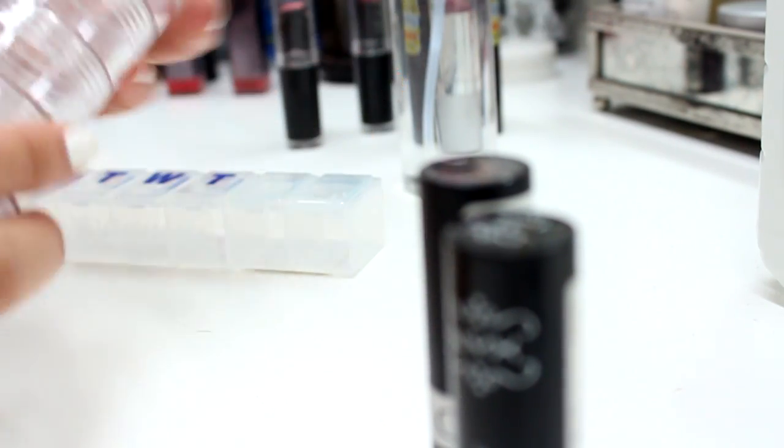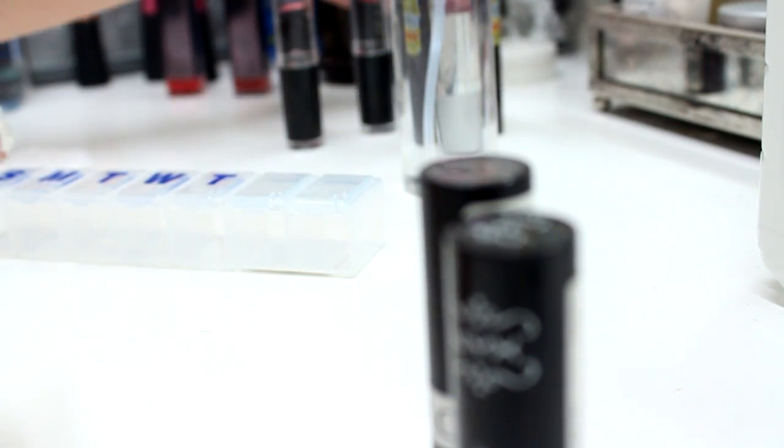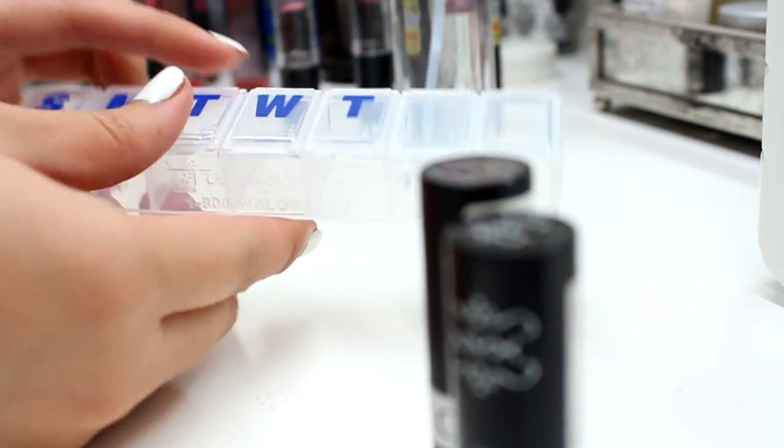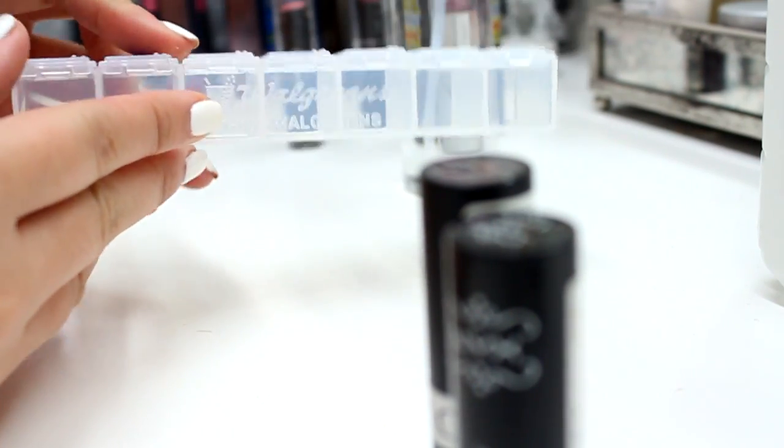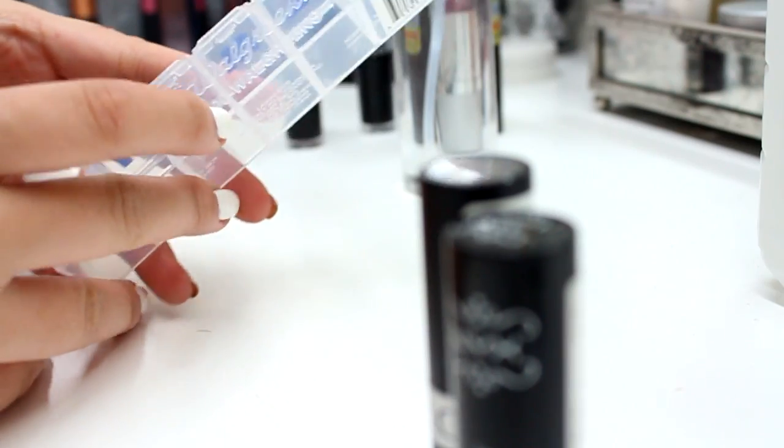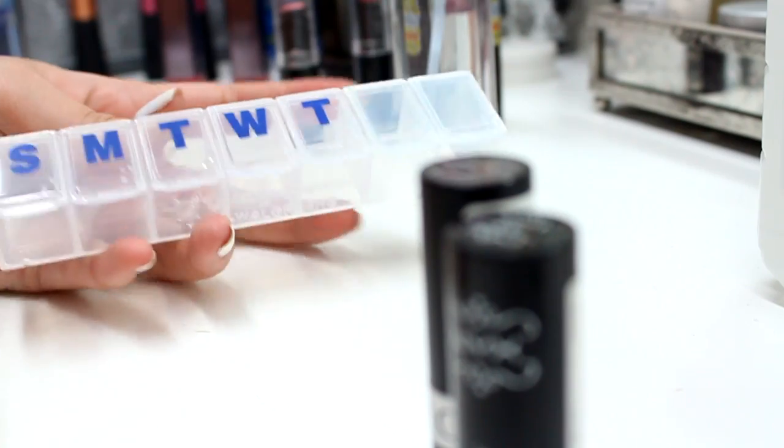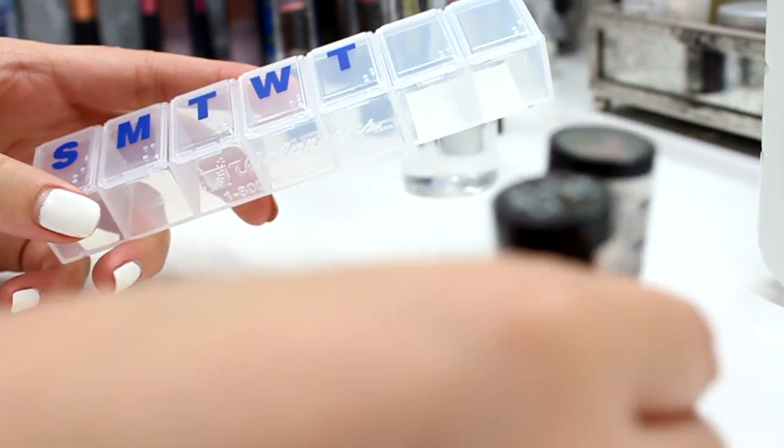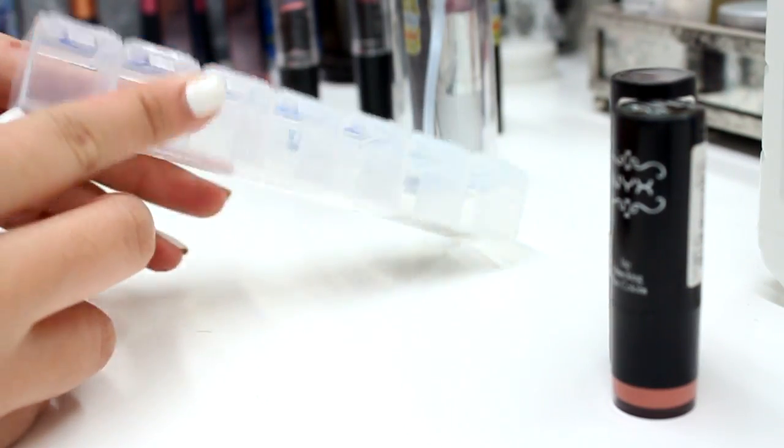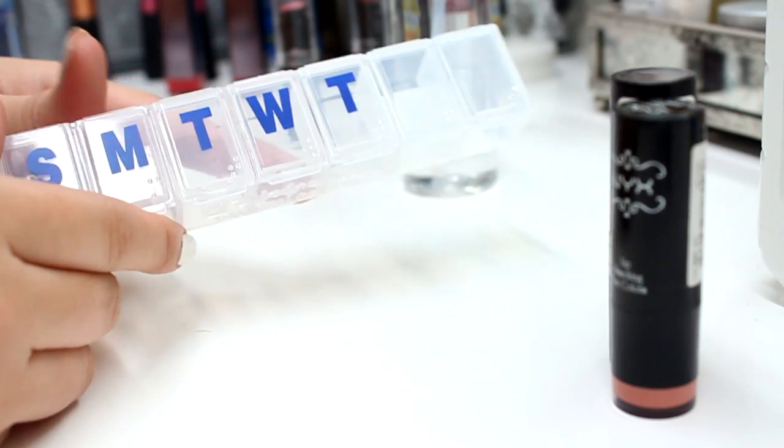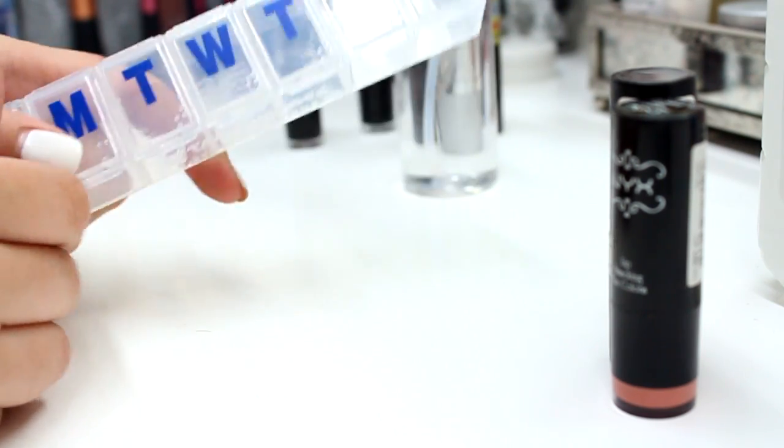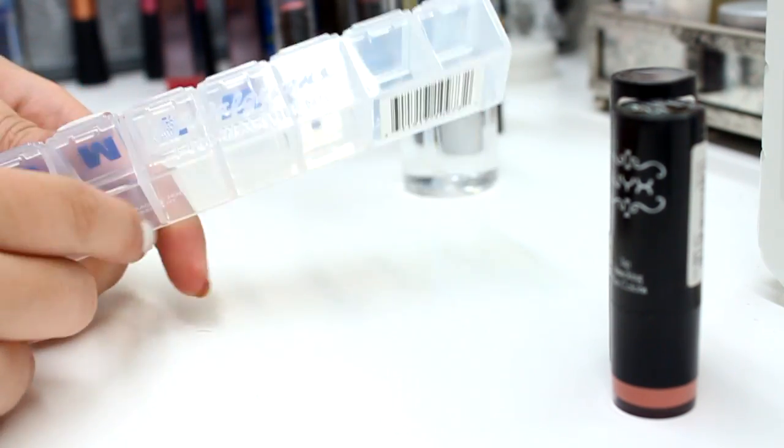these stackable containers. But for convenience, you can also get these little pill cases from your drugstore like Walgreens or CVS. I've already removed these little letters—I got this container from Walgreens for 99 cents and that's all you need. It can store up to seven lipsticks.